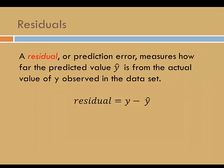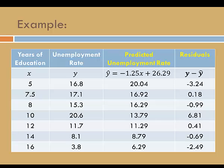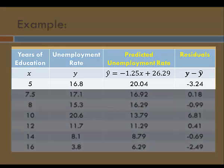A residual, or prediction error, measures how far the predicted value y-hat is from the actual value of y observed in the data set. The formula for residual is y minus y-hat. Here I've added another column to our table. In the far right, I've calculated the residuals, y minus y-hat.